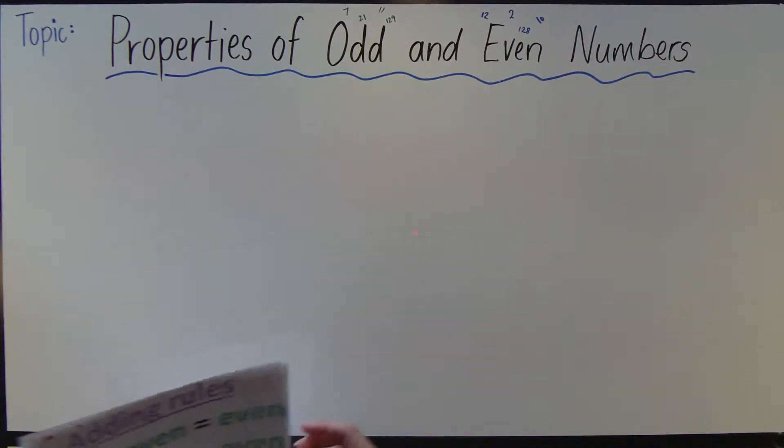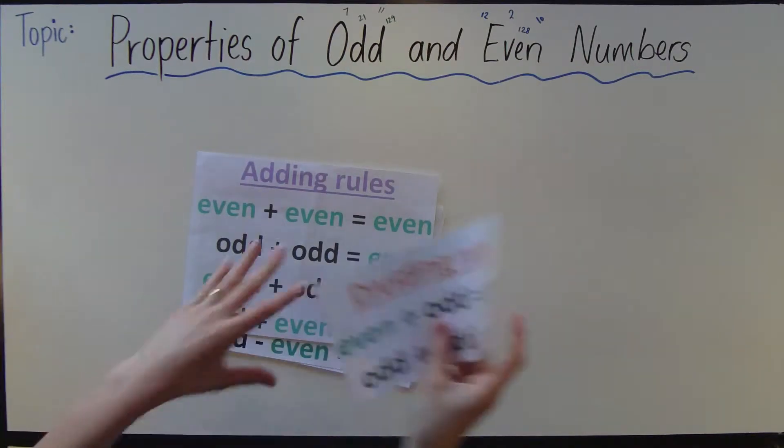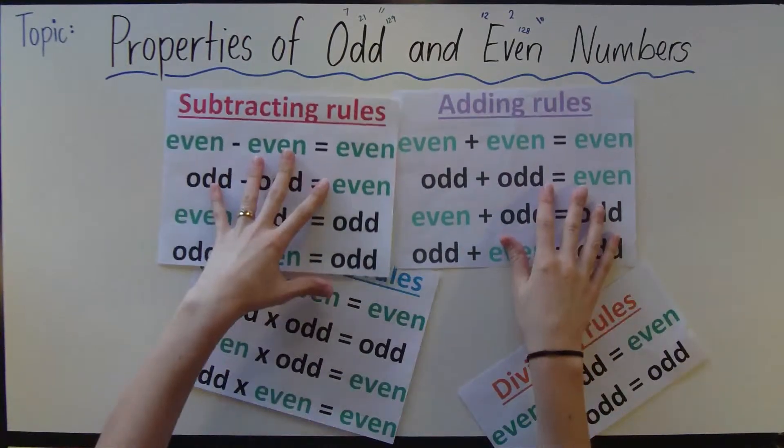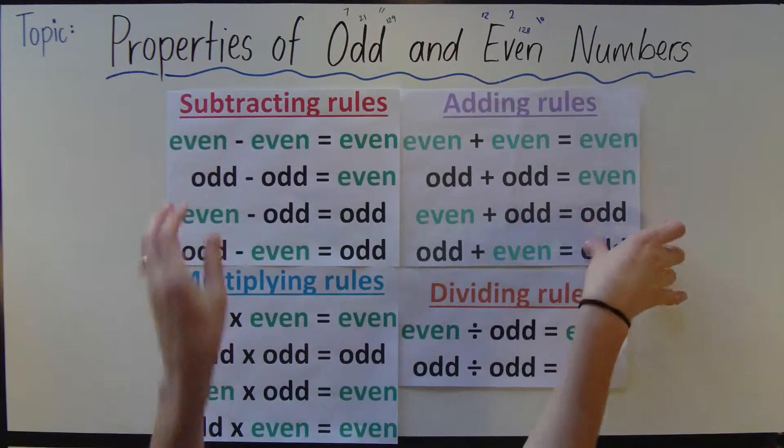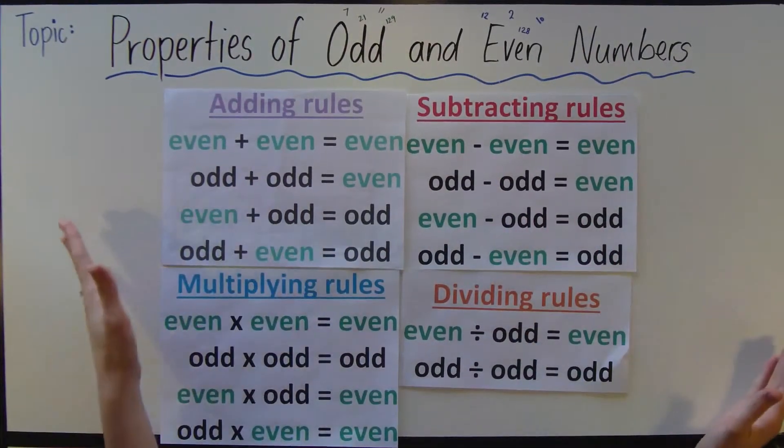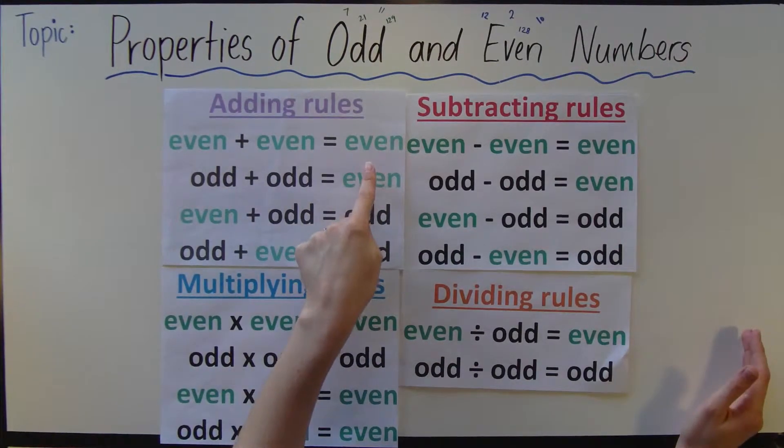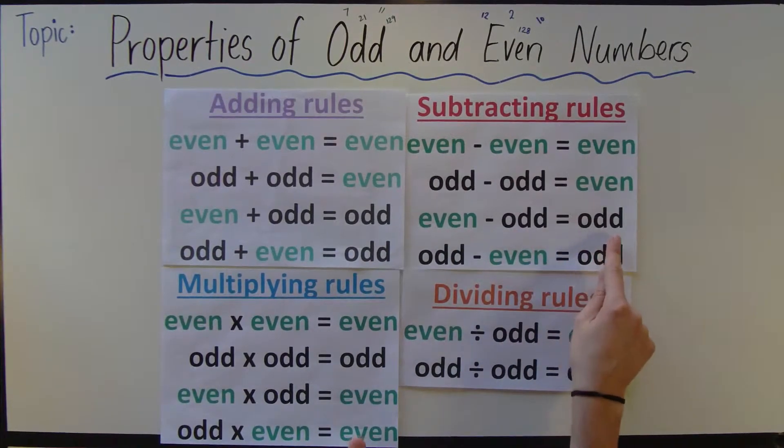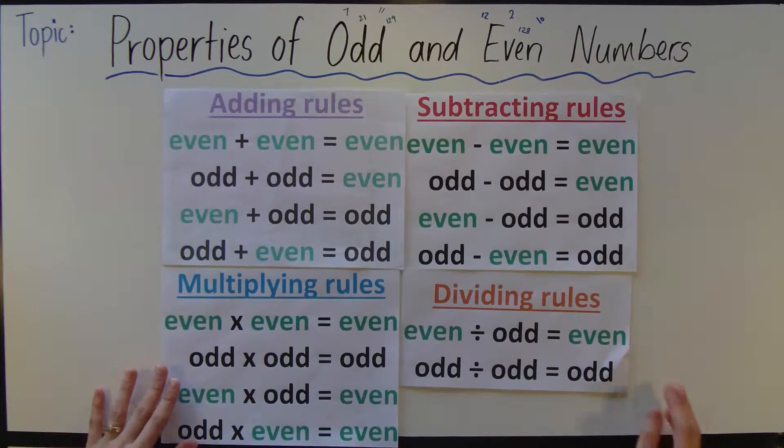Now we're going to look at the rules for adding, subtracting, multiplying and dividing with odd and even numbers very briefly. Here we've got an example: an even number plus an even number will equal an even number, and an even number take away an odd number will equal an odd number. For the subtracting rules, you've got multiplying and dividing as well.